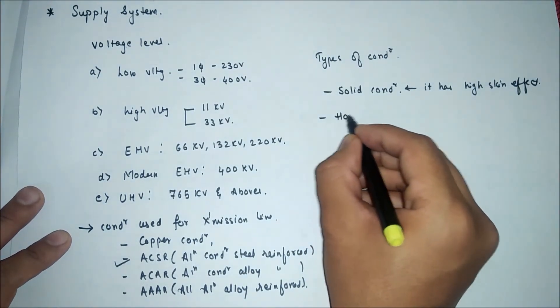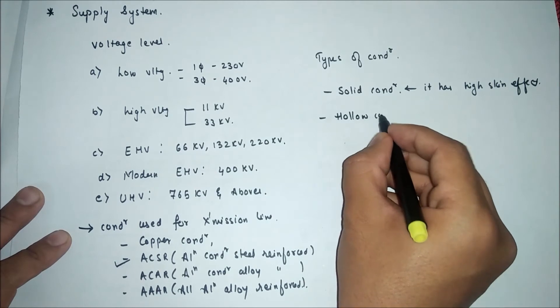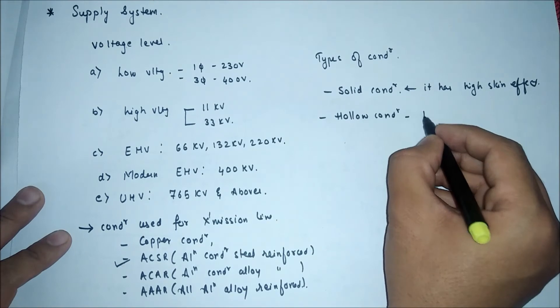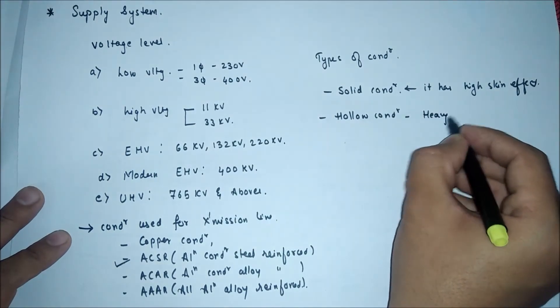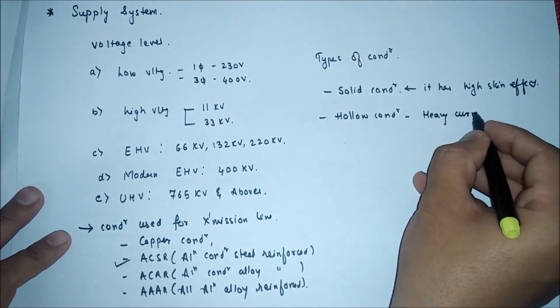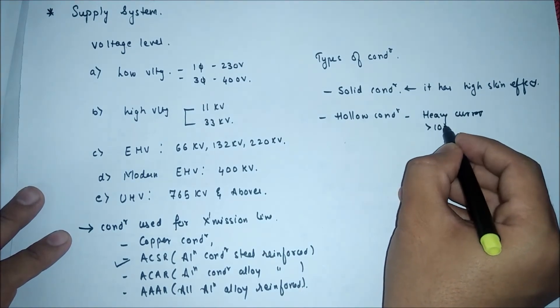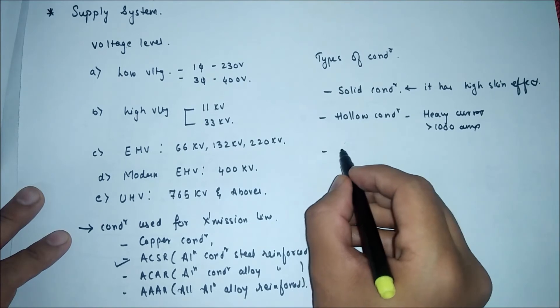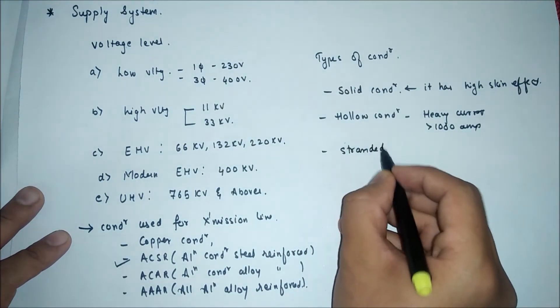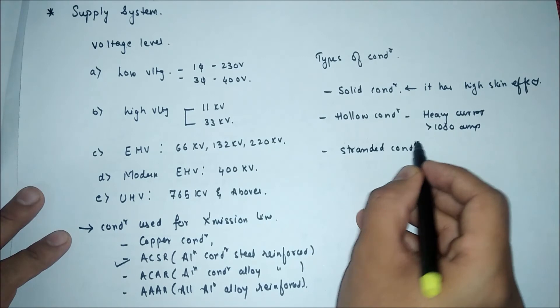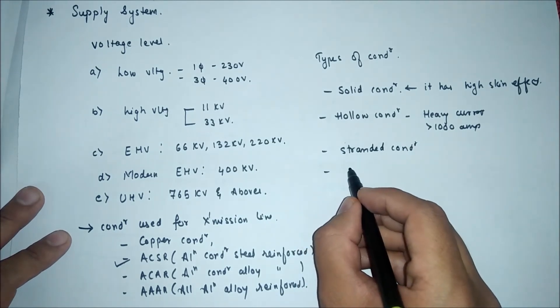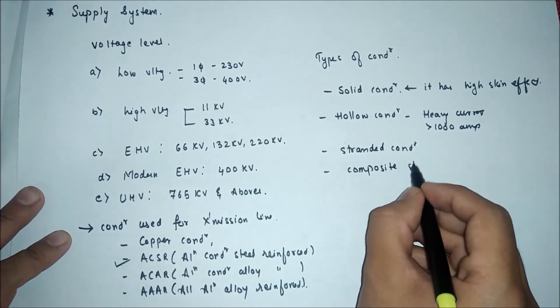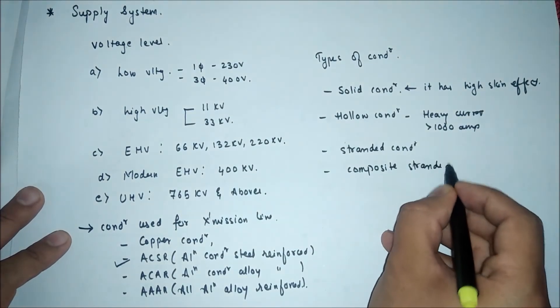Second one is hollow conductor. It is preferred for heavy current greater than 1000A. Third one is stranded conductor. Fourth one is composite stranded conductor.